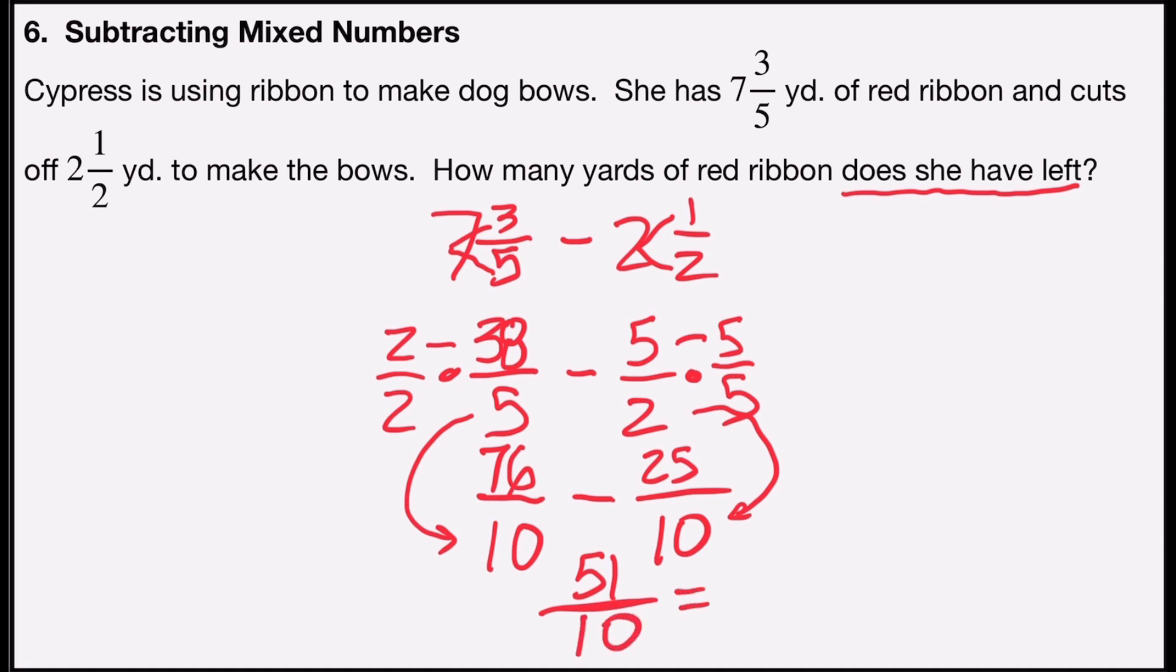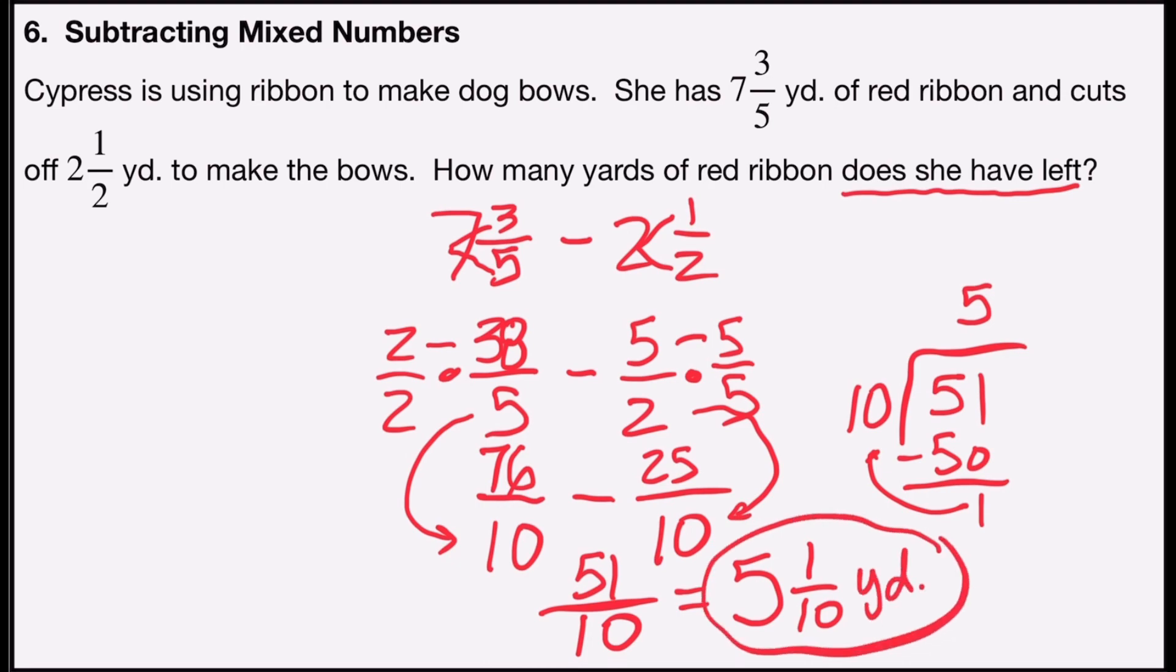And now I can rewrite that in mixed number form. Ten divides into fifty-one how many times? Five full times will give me fifty. And when I subtract, I have a remainder of one out of ten. So that means Cypress has five and one-tenth yard of red ribbon left.